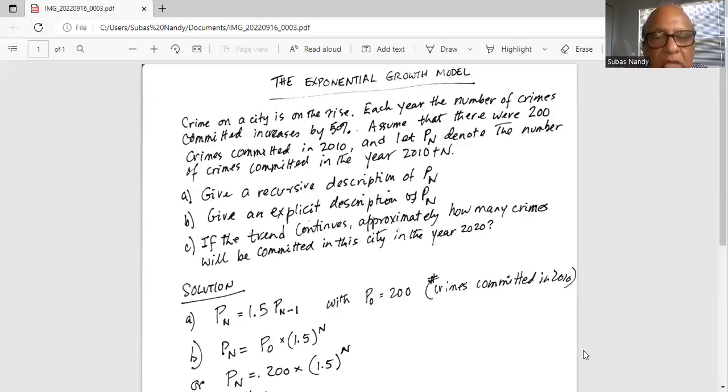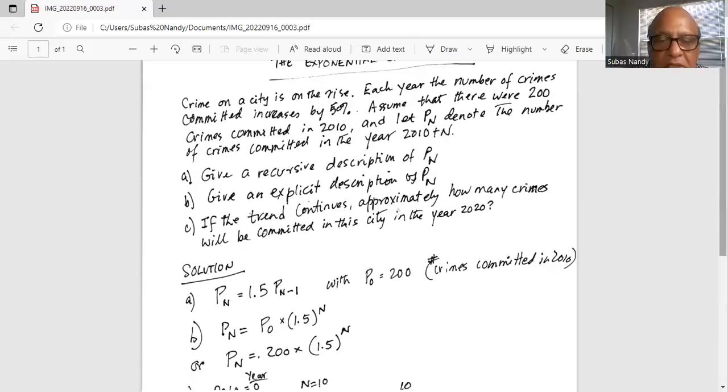So then they want us to come up with an explicit description of Pn. So Pn equal to P0 times 1.5 to the power of n.